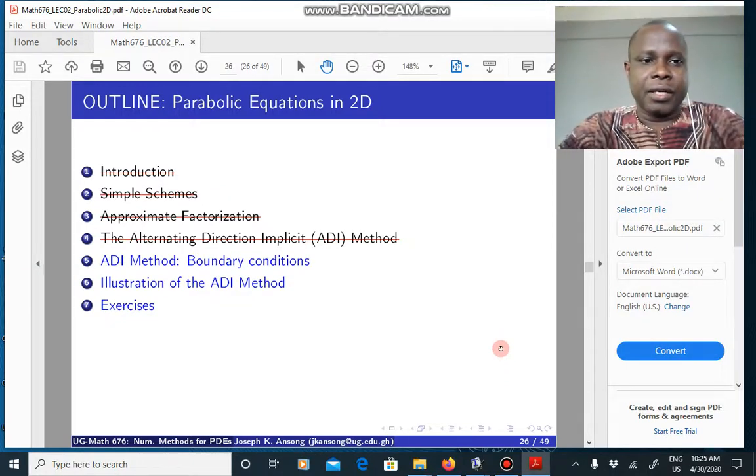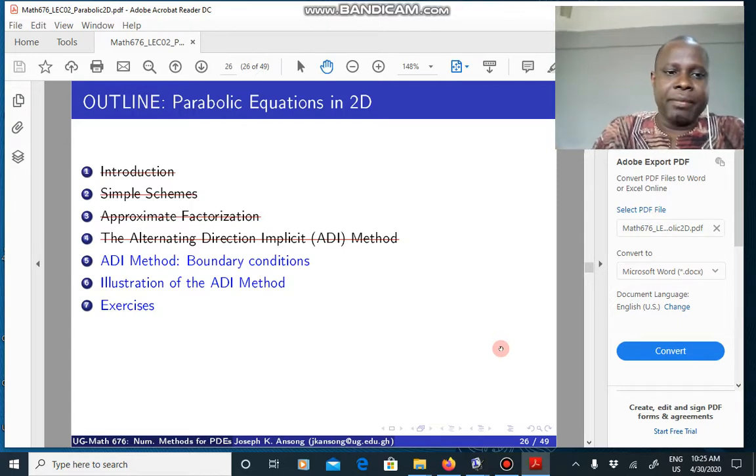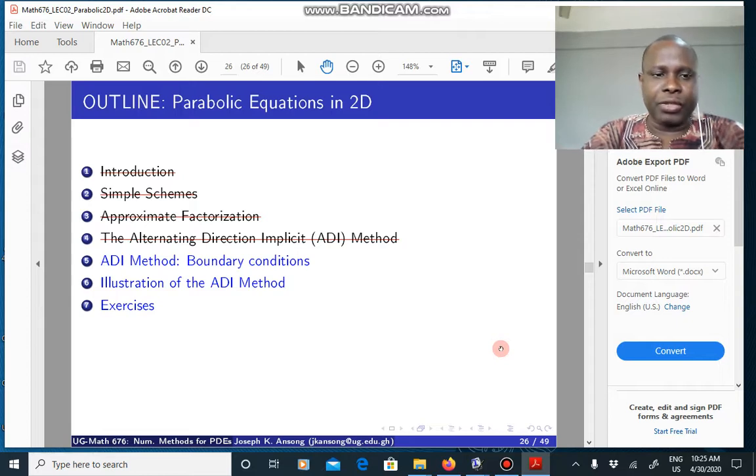Hello. In the previous lecture, we looked at the ADI method. Basically, we went through the process of computing a solution to the 2D parabolic equation using the alternating direction implicit or ADI method.